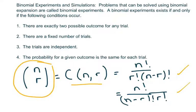So I have some examples. Basically, binomial experiments exist if and only if the following conditions occur: there are exactly two possible outcomes for any trial, for example if you toss a coin you're either going to get heads or tails; there's a fixed number of trials, that means I'm going to say flip the coin say five times; the trials are independent, one doesn't depend on the other; and the probability for the given outcome is the same for each trial, so the probability of tossing a head or coin for example is one half.